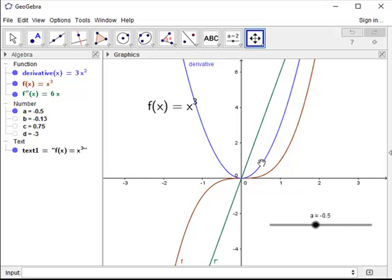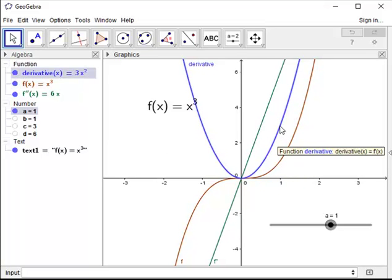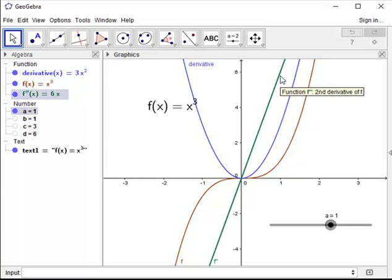if we move a over to about one, we can see that the original function is one, which makes sense. It's just x squared, the derivative is at three, and the second derivative is at six.